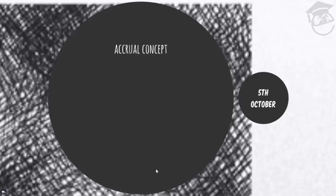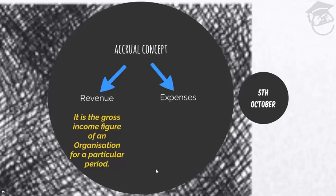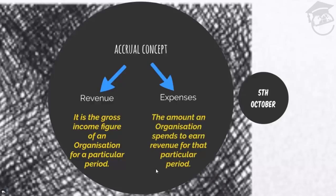This particular concept applies to both revenue and expenses. Revenue is the gross income figure of an organization for a particular period — whatever a business person earns by selling the goods or services he produces is his revenue or income or sale proceeds. The amount an organization spends to earn revenue for that particular period is expenses.